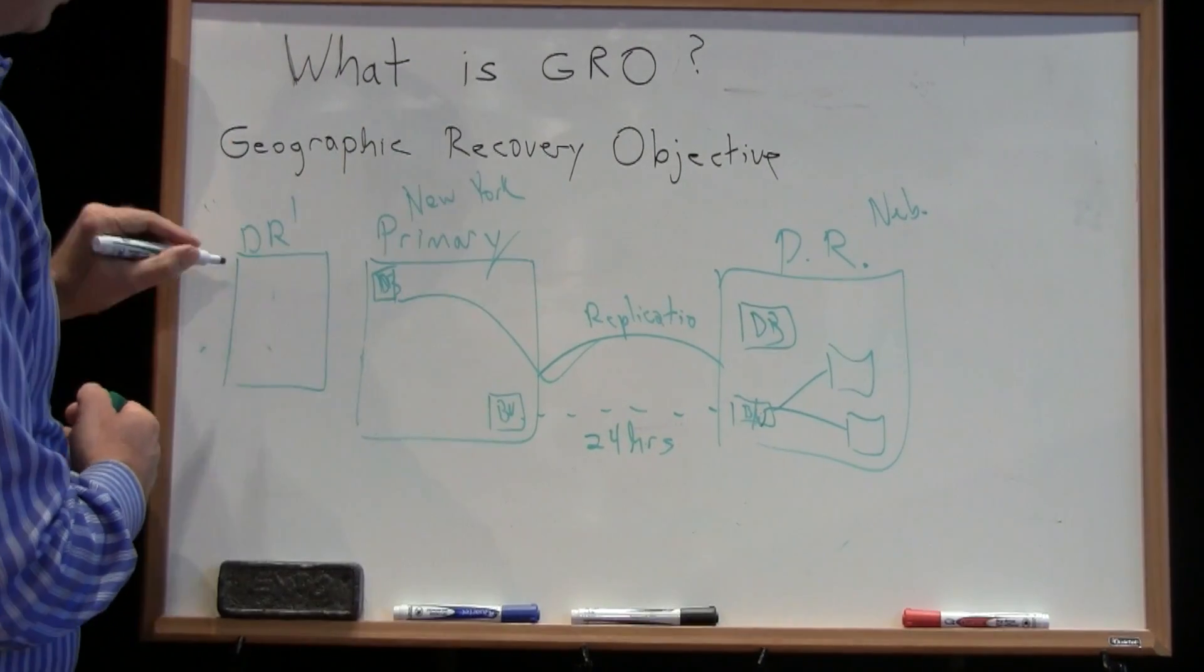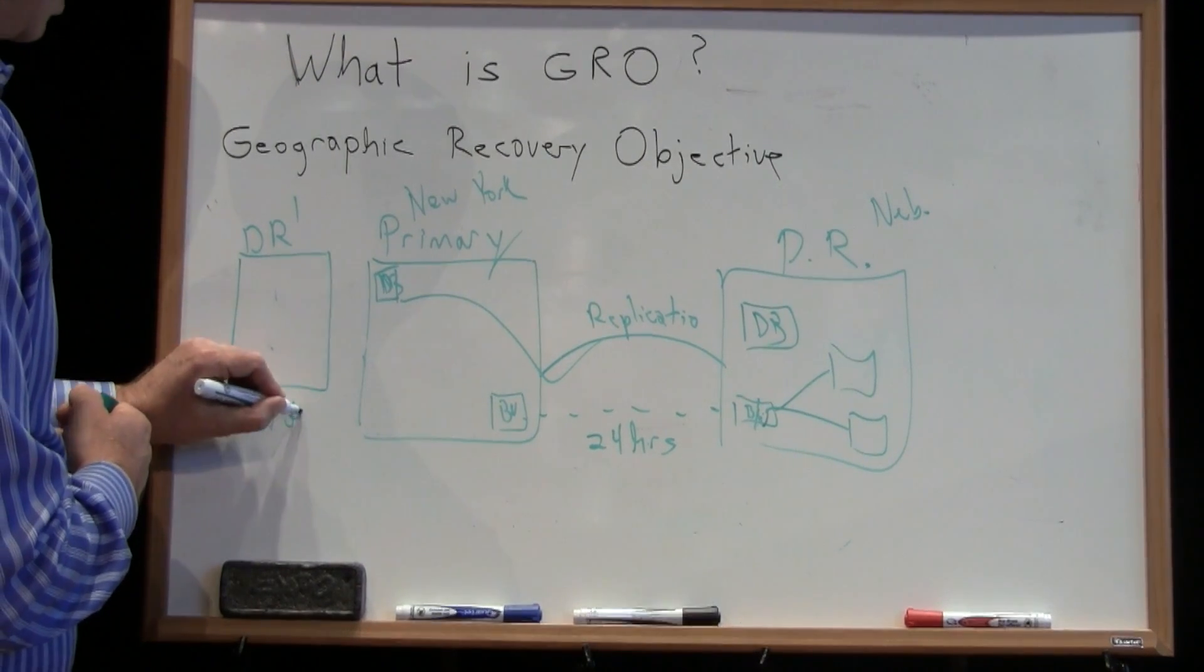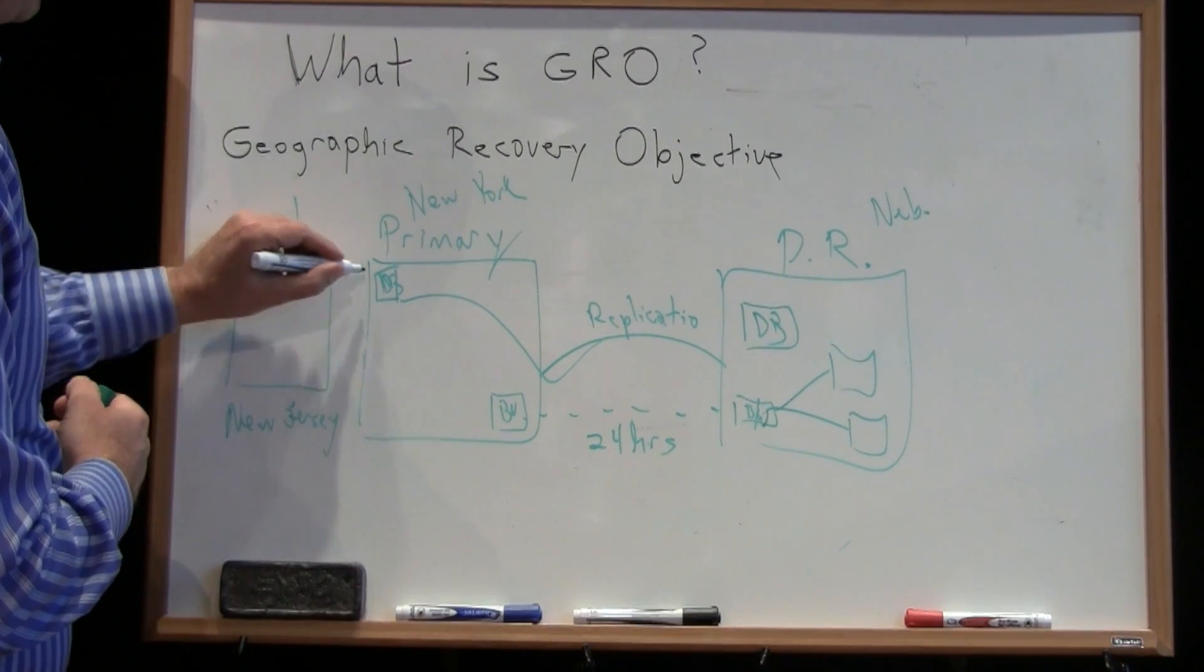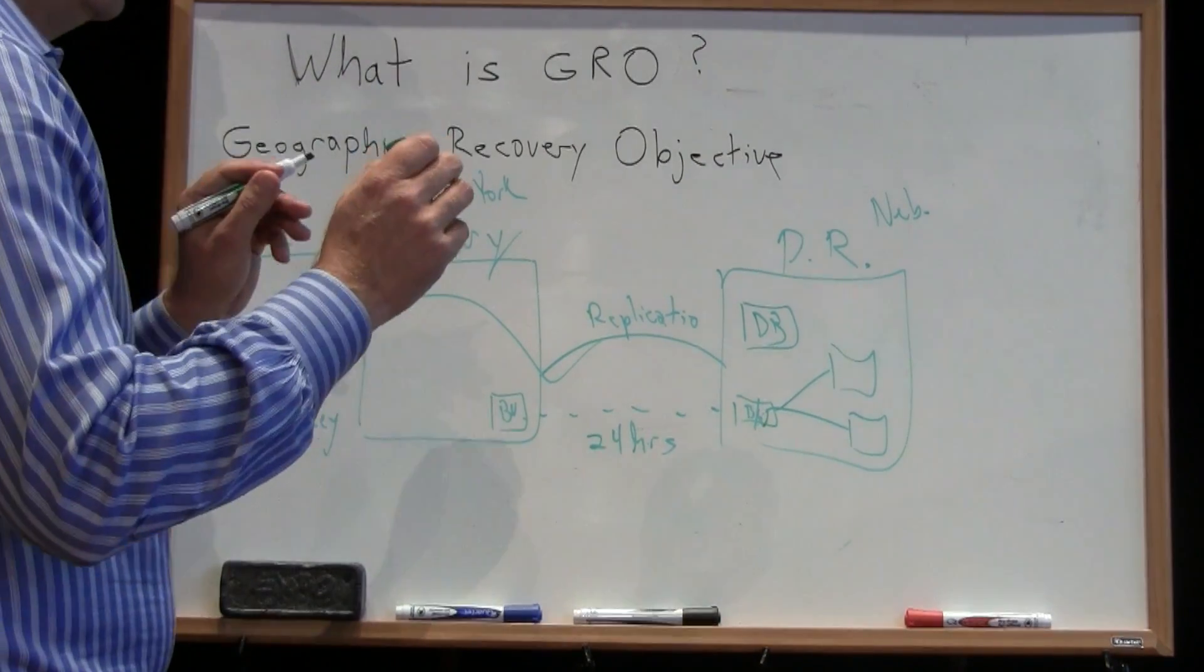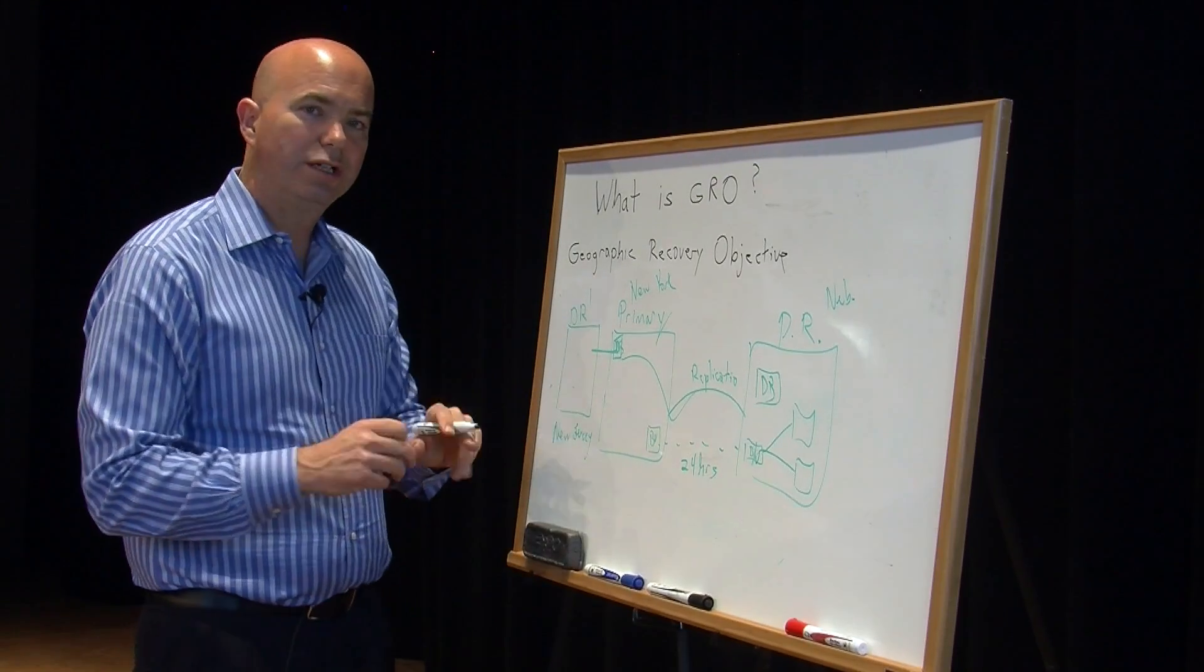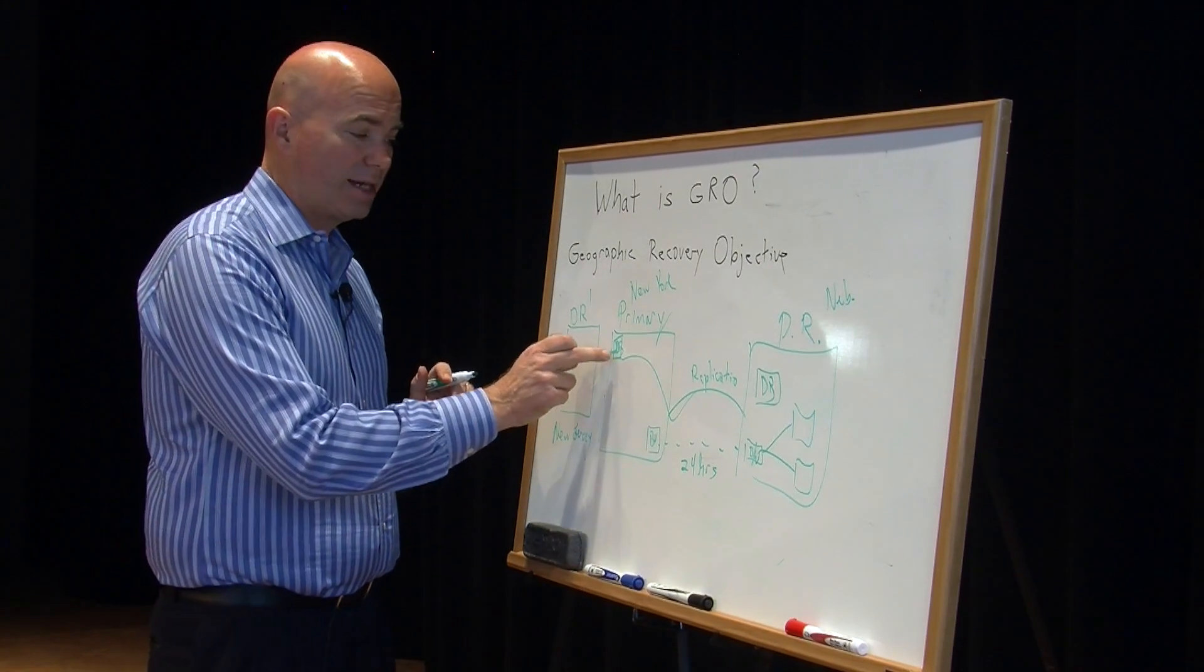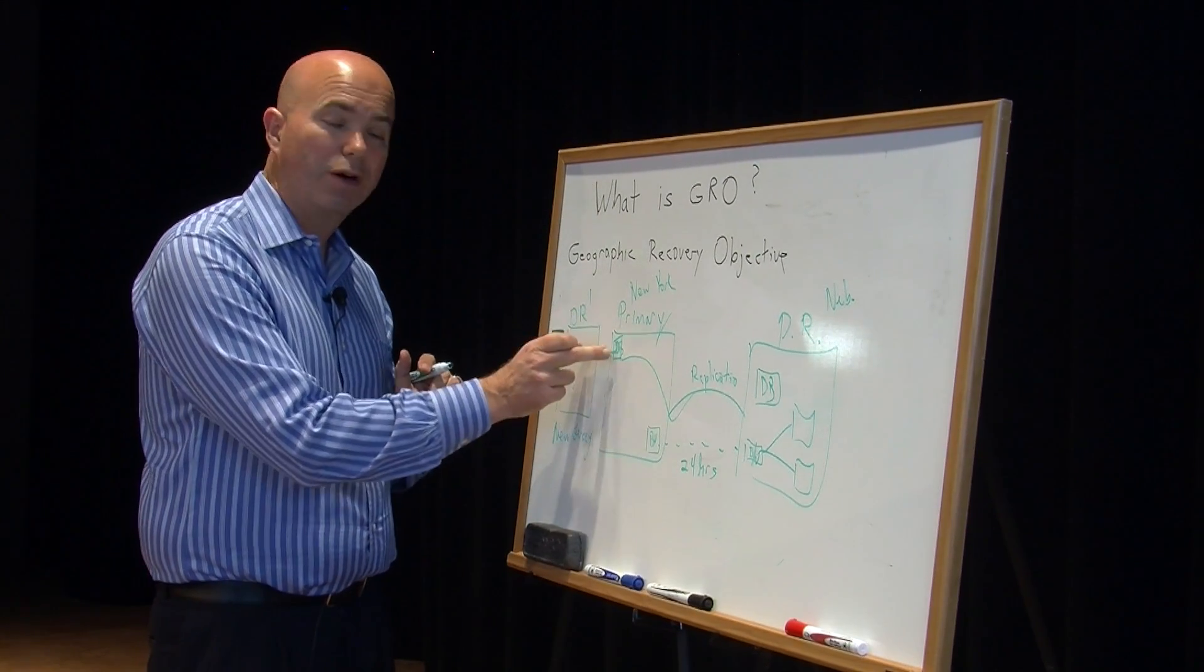So this might be, again, this is New York. This might be New Jersey. And I might be doing a very high speed synchronous replication to my site in New Jersey. And now synchronous means that as I write data here, I write data there. So it's 100% perfect.